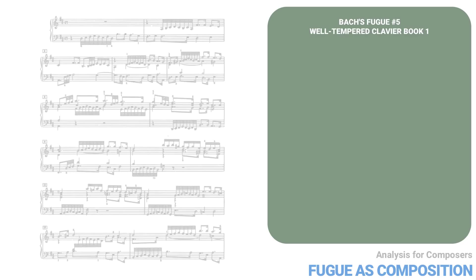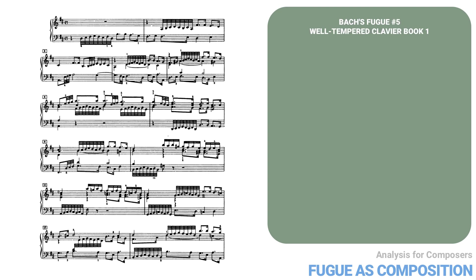In this lesson I want to take one of Bach's simpler fugues — number 5 from the Well-Tempered Clavier, Book 1 — looking at it not just according to the conventions of fugue, but also as a musical composition. The point here is to see fugue as composition, not just as an academic exercise.